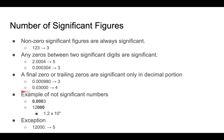Trailing zeros, or final zeros, are significant only in the decimal portion. For example, in 0.000980, the leading zeros are insignificant. But the final zero is significant because it is a trailing zero in the decimal portion. So 0.000980 has three significant figures.